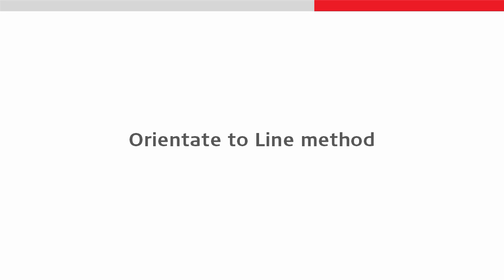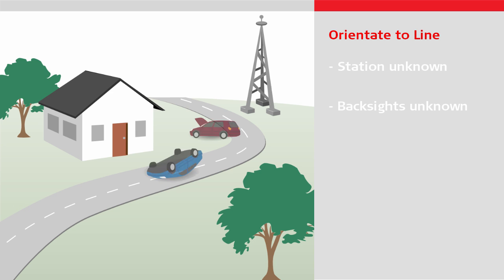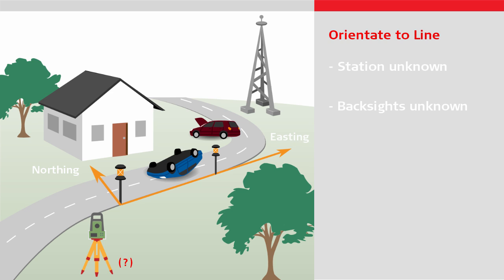The orientate to line method is the second of two methods which allows the total station to be located anywhere, and the back sight points are not known. Imagine if you need to measure a road traffic accident — in this case, it is simply needed to measure the cars and street furniture relative to each other. It could be really useful to orientate everything relative to the edge of the road, for example. The total station can be located anywhere suitable, and it is then simply needed to measure two points. These two points define the northing or easting axis, with the first measurement being given the coordinates. All subsequently measured points are then related to this axis — that is, related to the edge of the road in our example.